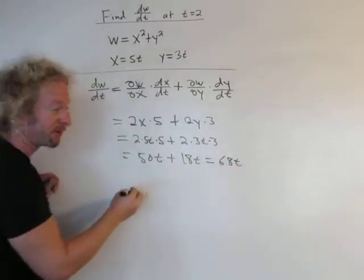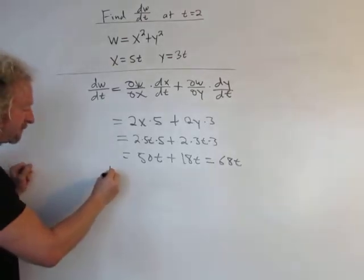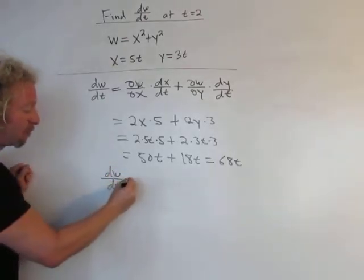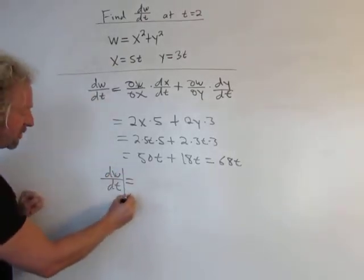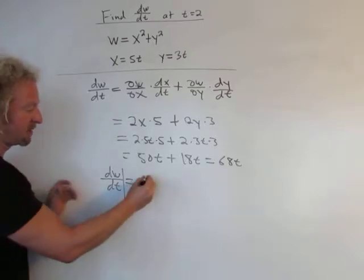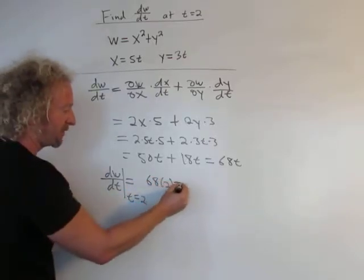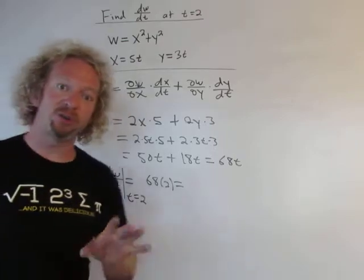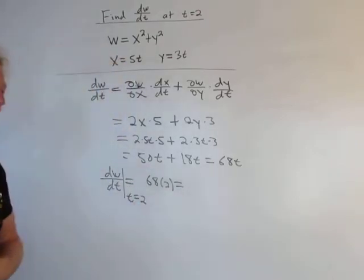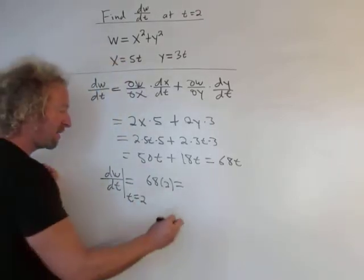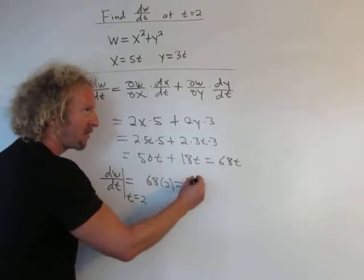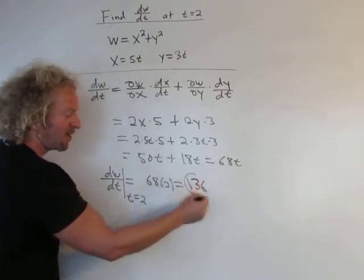That's dw dt. So finally, dw dt at the moment in time when t is equal to 2 will be 68 times 2. Hard math. Let's see. 60 times 2 is 120. 2 times 8 is 16. Yeah, it's going to be 136.